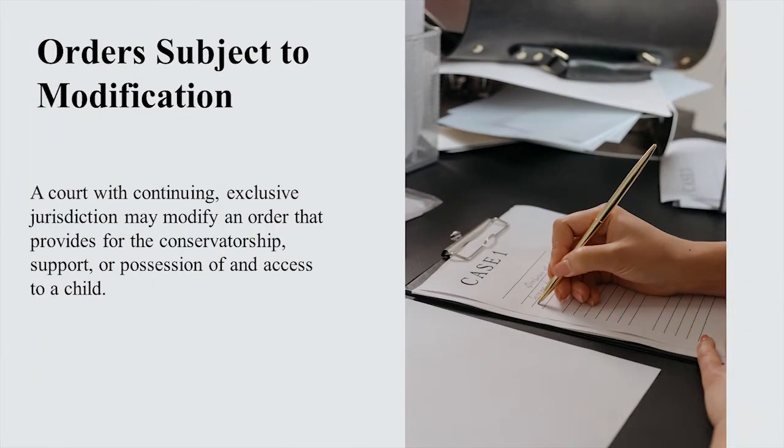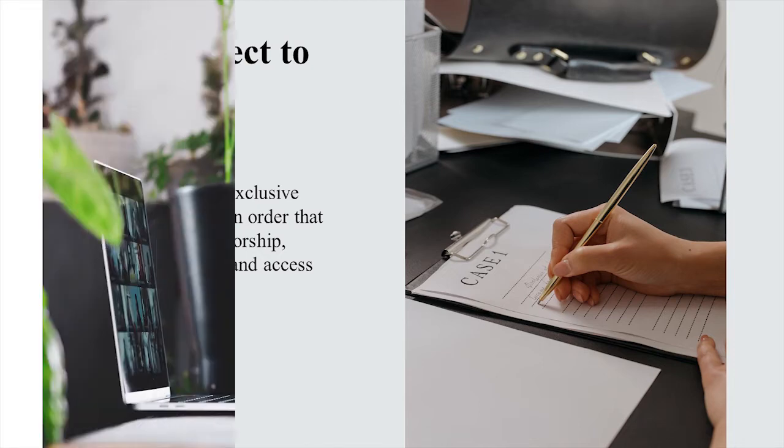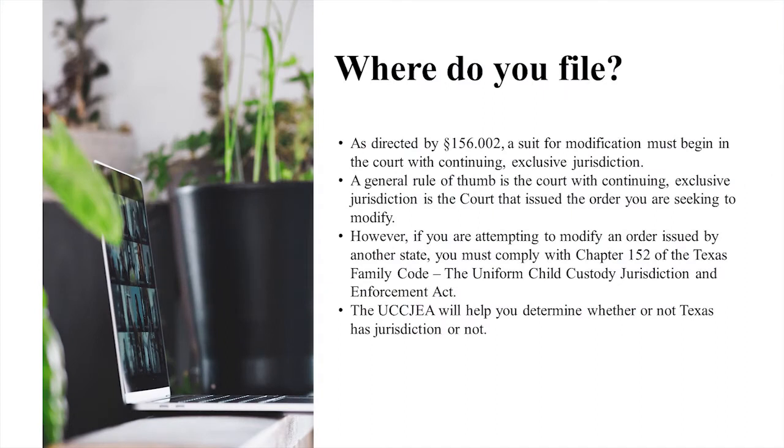What you'll need to look at first is: is your order subject to modification? If that order does provide for ongoing periodic child support payments and those children are still under the age of 18 and/or still in high school, then that is an order that can be subject to modification.